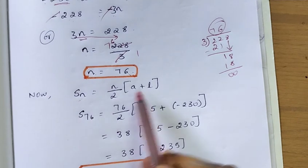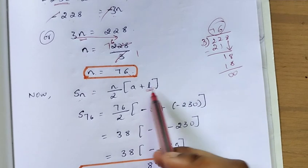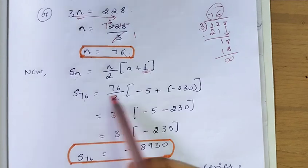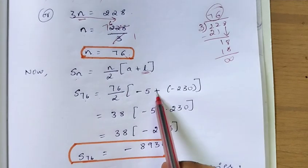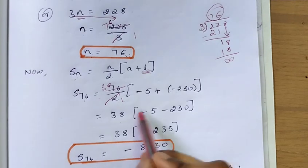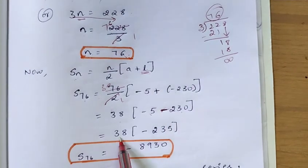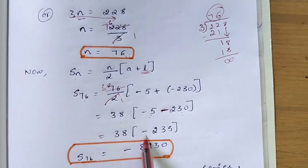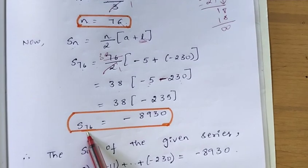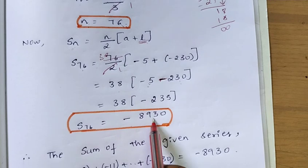Now, to find the sum of the given series, we use the formula Sn = n by 2 into (a plus l), since we know the last term l. Substituting: S76 = 76 by 2 into (-5 plus -230). Simplifying: 76 divided by 2 is 38, and -5 plus -230 equals -235. So S76 = 38 into -235, which equals -8930.